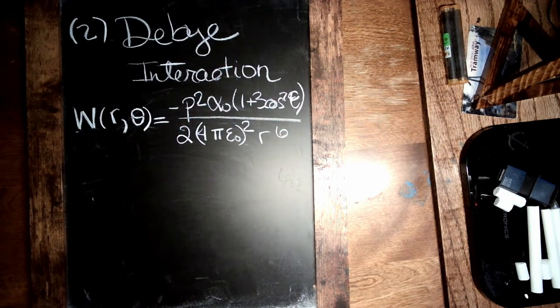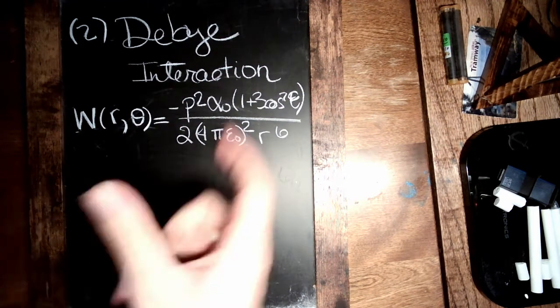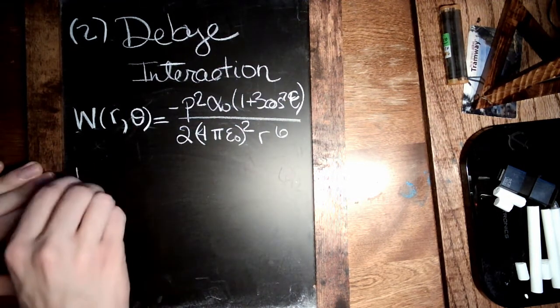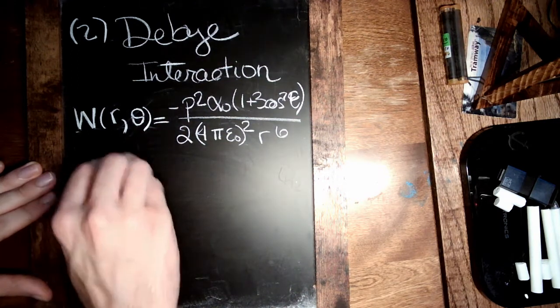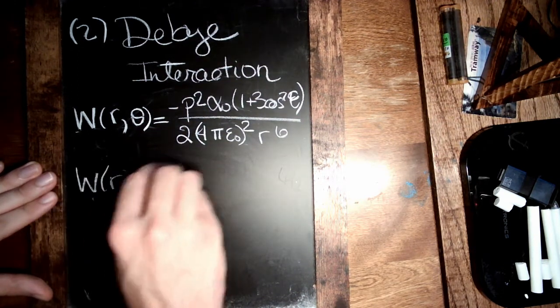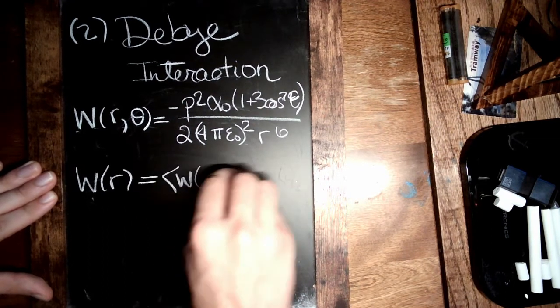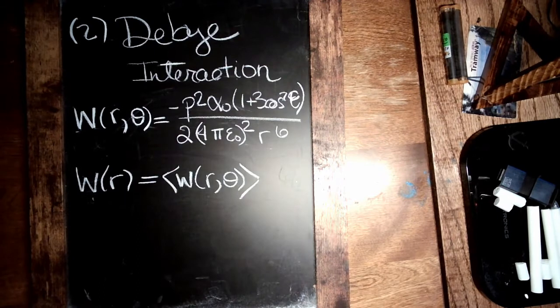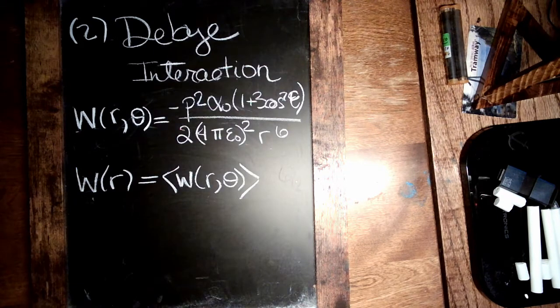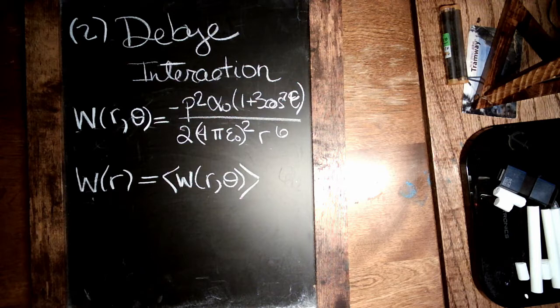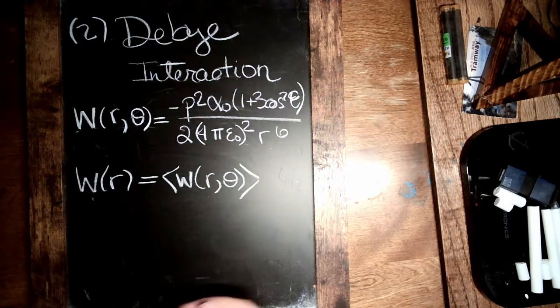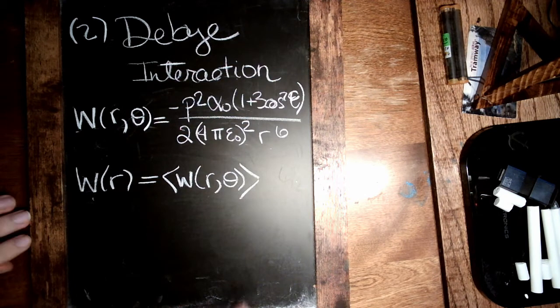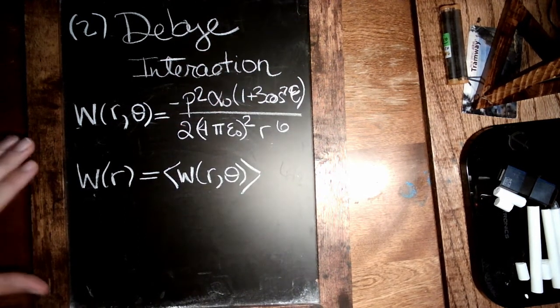But as before, we want to say that that dipole is free to rotate over different orientations. So what we're actually after is W of only r, which is the angle average of this previous dude. Now as we may remember, the average of the cosine squared is one third. So that's effectively just going to kill that three that we have there.